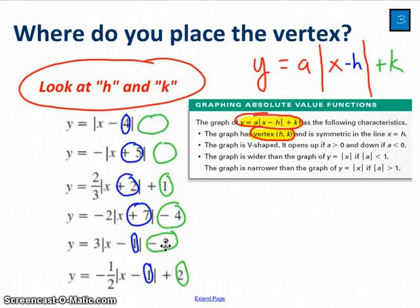Those h, k values are going to be the coordinates of the vertex. So this first one, again, it's assumed to be a minus sign here, so that's positive 4. There's nothing there. Nothing is 0. So my vertex for this first one is at 4, 0.